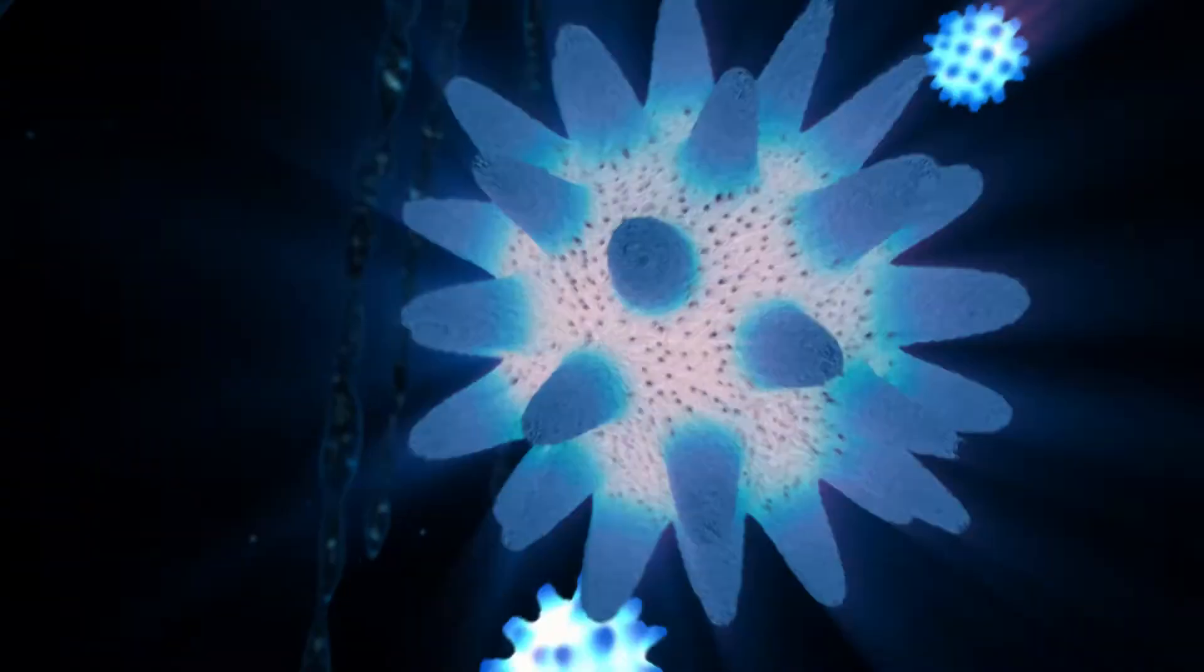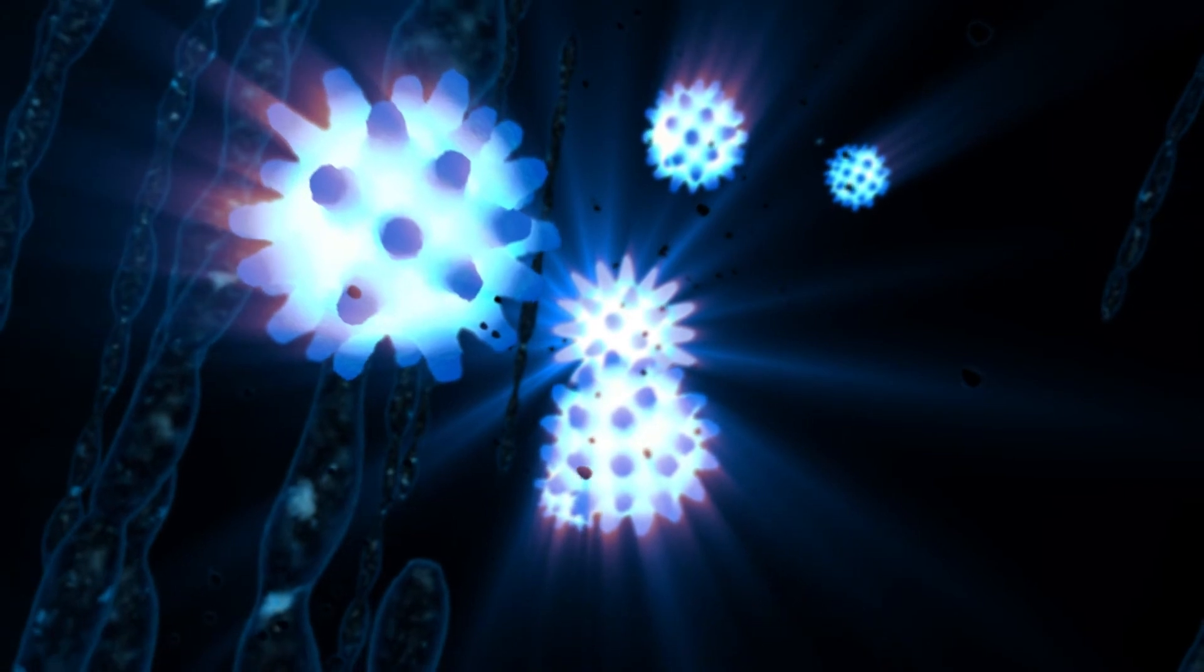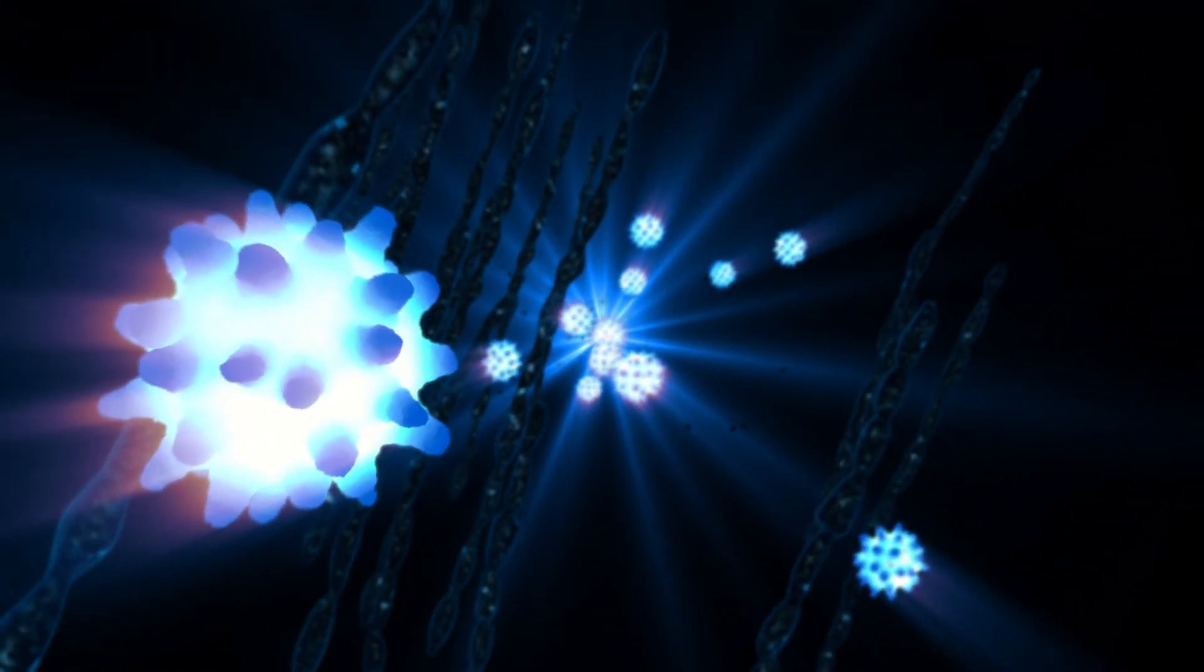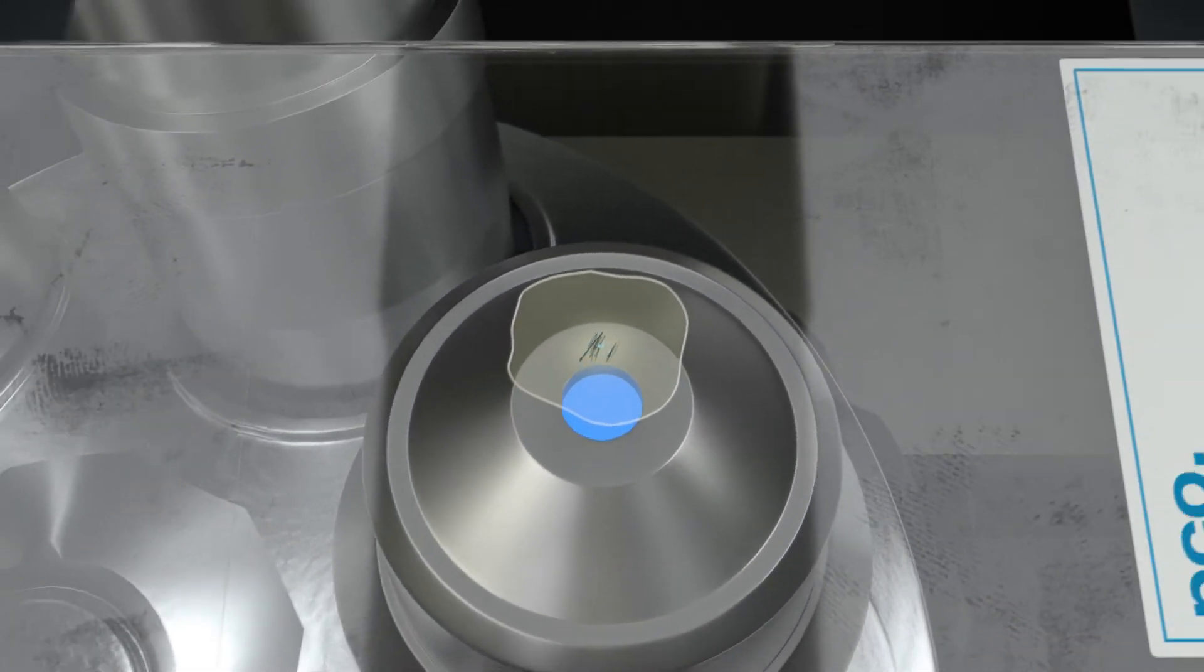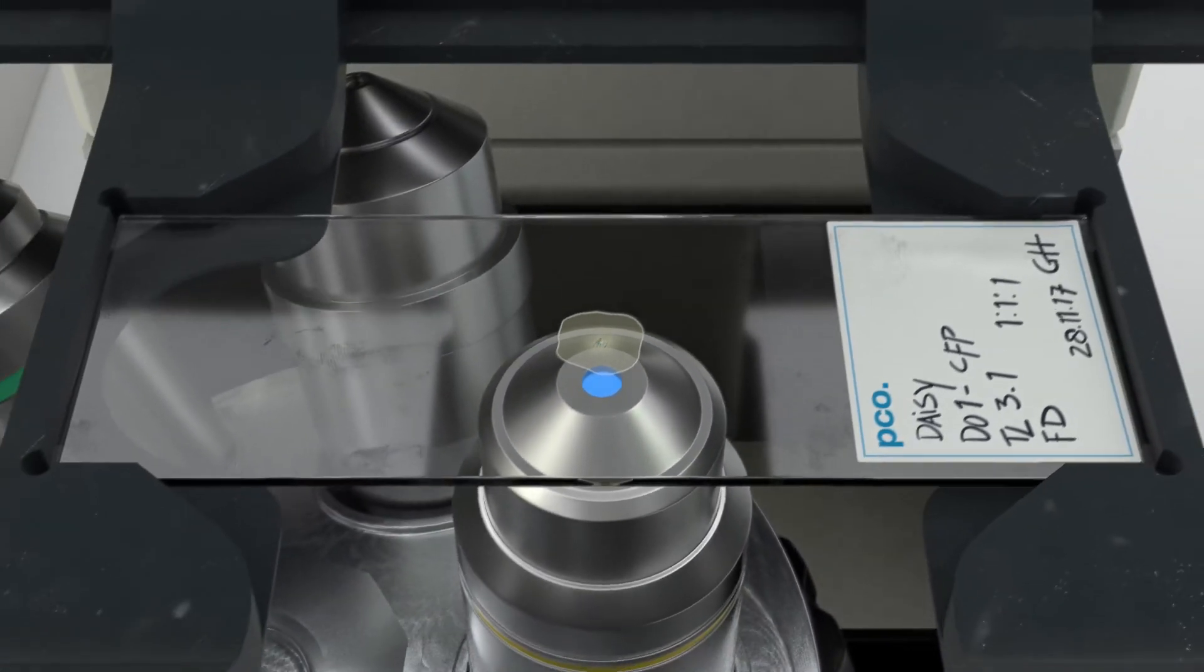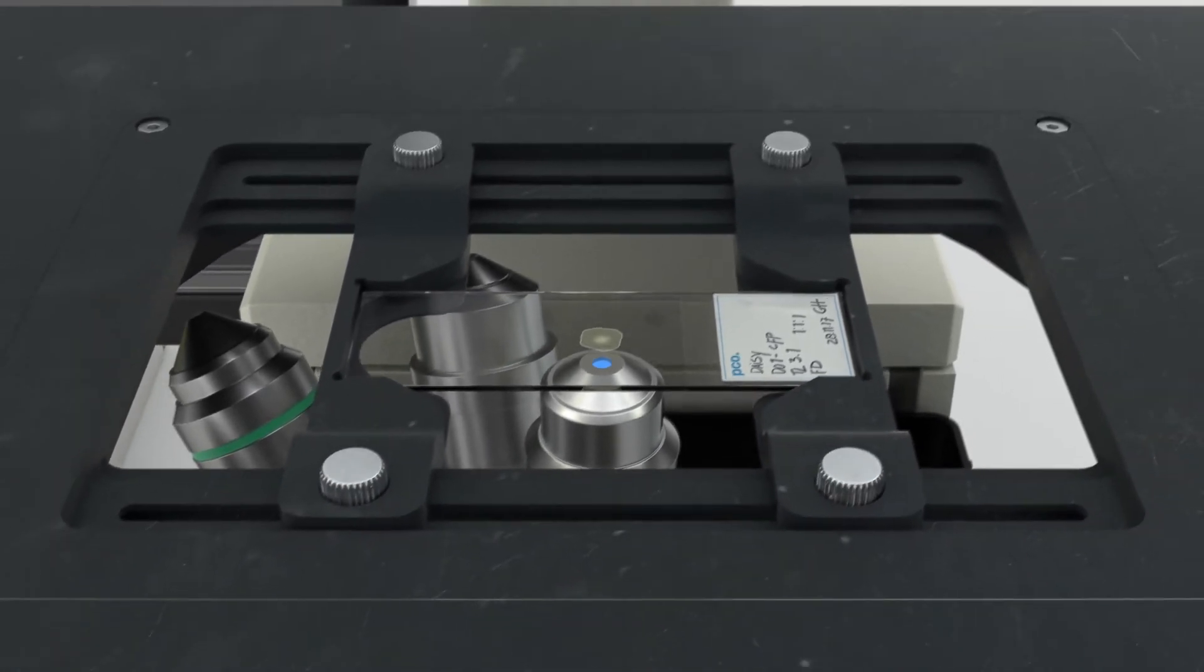Fluorescence lifetime imaging, or FLIM, in the time and frequency domain. The differences in fluorescence lifetimes in luminophores can be used as an imaging technique called FLIM. This can be achieved both in the time and the frequency domain.